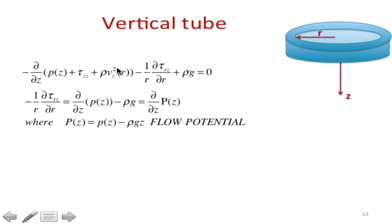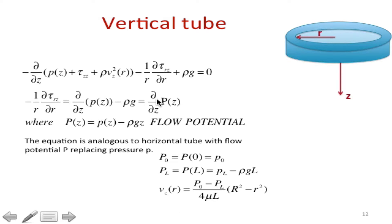When I write down what Vz and tau-rz are, this is the equation we get. It helps a lot that Vz is not a function of z — so a lot of terms disappear, and I'm only really left with the pressure term. That pressure goes to the other side: minus 1/r d(r*tau-rz)/dr equals the z-derivative of the flow potential or generalized pressure. When I solve that and put in constants, I get our famous parabolic velocity profile.